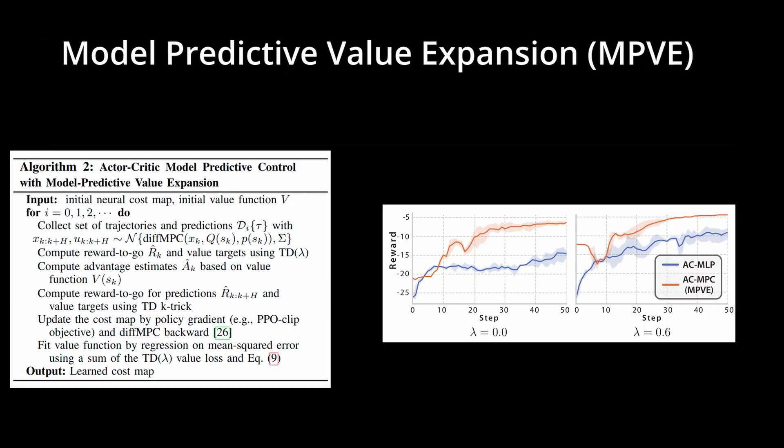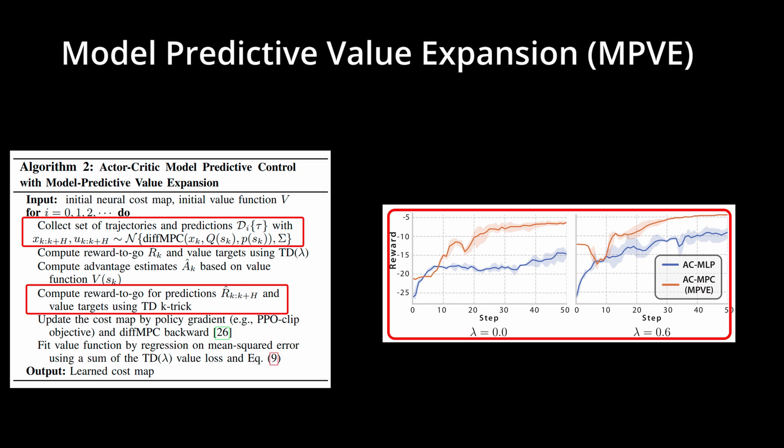In this extension, we also present an improved version of our original ACMPC algorithm called model predictive value expansion. The main difference is that we use the predictions produced by the differentiable MPC module to improve the training of the value function. This technique results in improved sample efficiency during training.